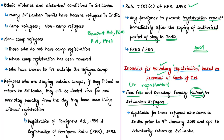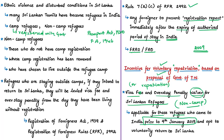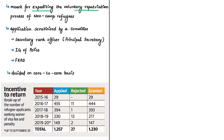This scheme is for non-camp refugees or those staying outside government camps. Only the registration particulars of these persons are required with respect to voluntary repatriation, as the registration particulars of camp refugees are already with the government. The scheme is applicable for Sri Lankan refugees who came to India prior to 9th January 2015, and in this way it is meant to expedite the process of voluntary repatriation for non-camp refugees, acting as an incentive for them to return to their homeland.